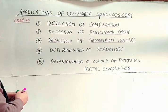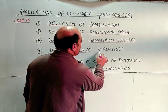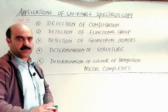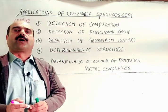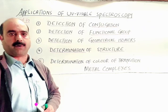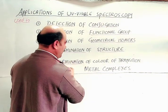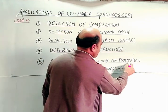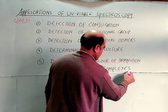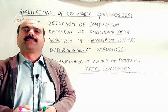Number four: UV-Visible Spectroscopy is also used for the determination of the structure of an unknown compound. Number five: it is used for the determination of the color of transition metal complexes, which are mostly colored.